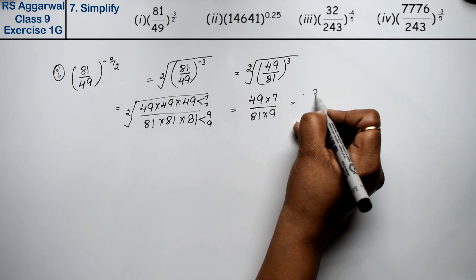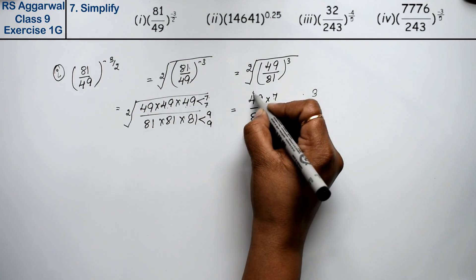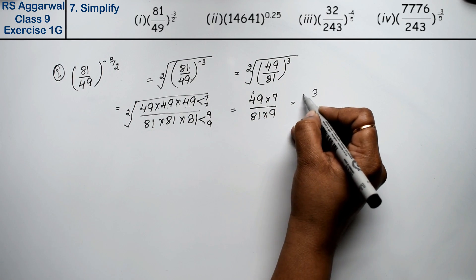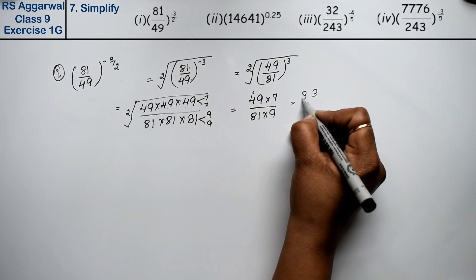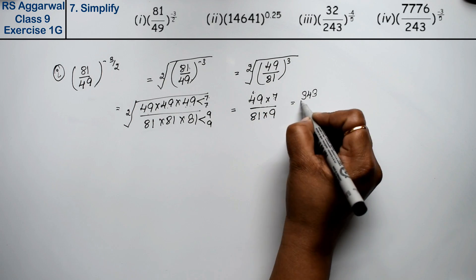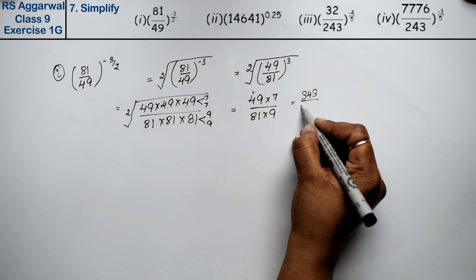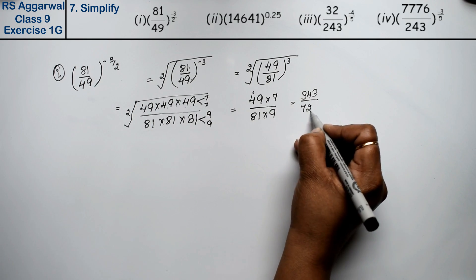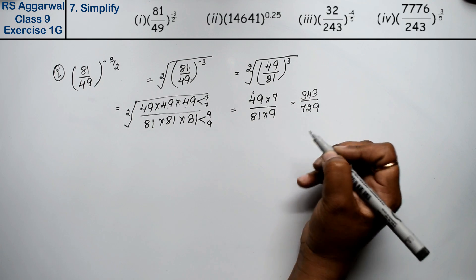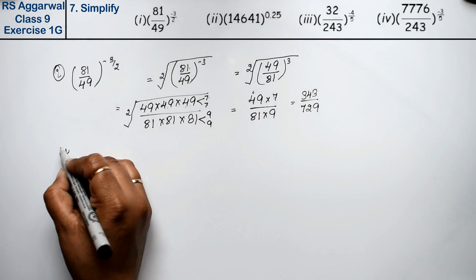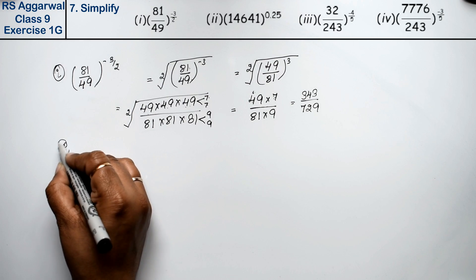Seven nines are 63. Calculating further: the answer is 343 upon 729.